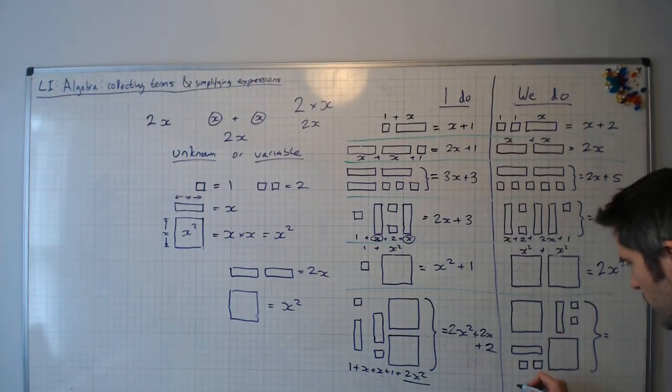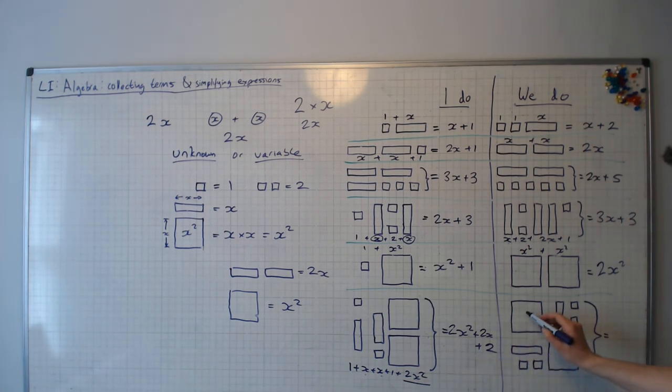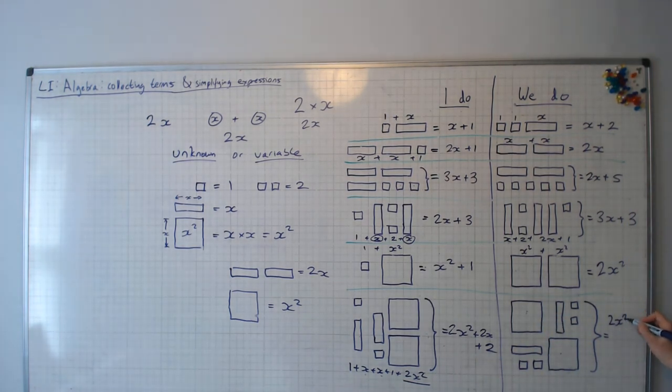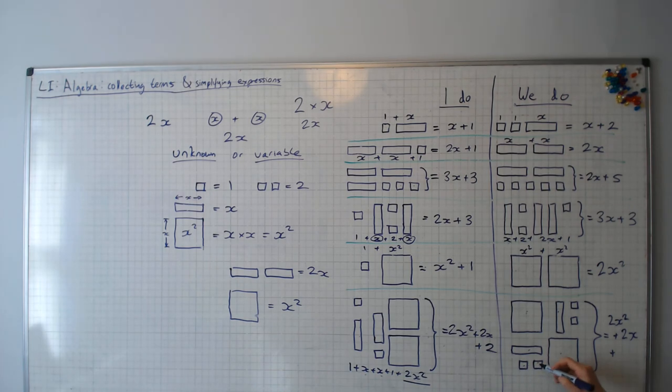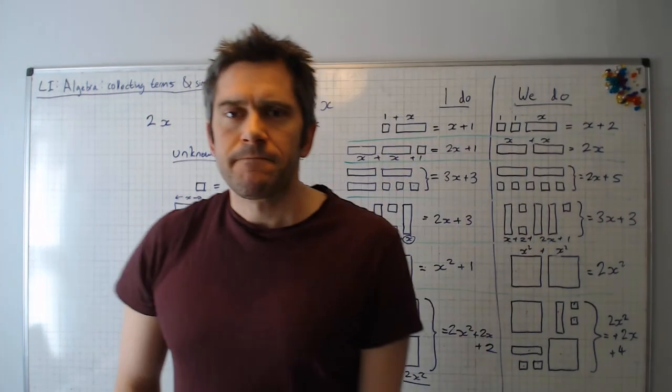Have a go at the last one. Okay, so we've got, let's just count them here. We're not going to write this down here. We've got 1x squared, 2x squared plus 1, 2x plus 1, 2, 3, 4.